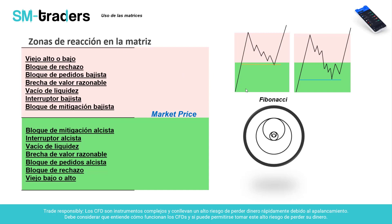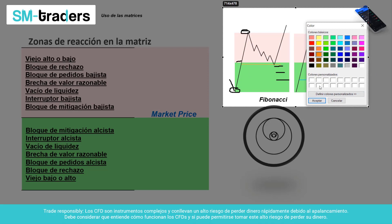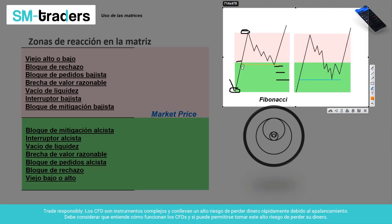Dentro de una matriz, es decir, dentro de un mínimo y un máximo, muchas personas se preguntan: si yo trazo un Fibonacci para buscar una compra entre un mínimo y un máximo y tengo el 50%, ¿cómo sé yo si el precio va a llegar al 61.8%, al 75% o al 79%? ¿Cómo hago para filtrar el nivel clave? ¿Cómo sé si el precio va a pegar en un 55%, 61%, 78% o 88%?